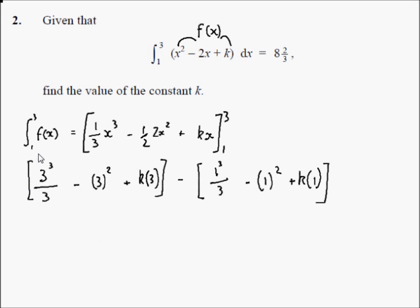Alright, 3 cubed is 27 divided by 3 is 9. We have 9 minus 3 squared which is 9, minus 9 plus 3k, minus 1 cubed, 1 over 3, 1 over 3 minus 1, 1 squared minus 1, plus k.